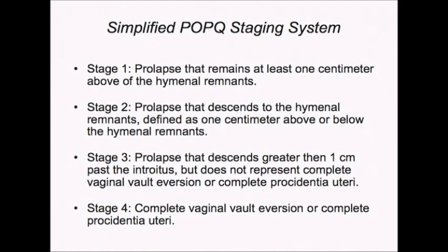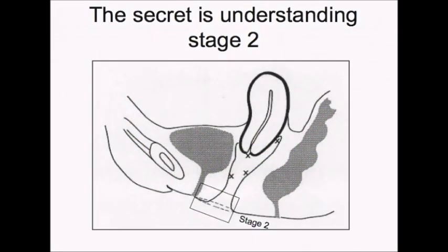Stage 4 is the complete vaginal vault eversion or complete uterine procidentia. The secret to understanding the staging system is to remember stage 2. Stage 2 has the point being measured between one centimeter above or one centimeter below the hymeneal remnants, as noted in this box in the diagram. If the point being measured remains one centimeter proximal to this box, it is stage 1. If it descends to within this box, it is stage 2. If it descends past this box, it is stage 3. And if there is complete eversion or procidentia, it is stage 4.